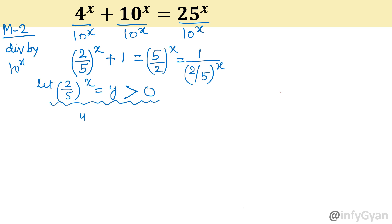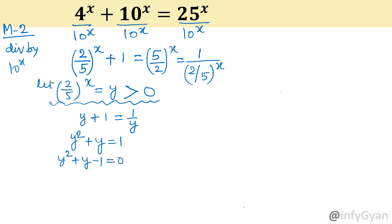So the equation will be y plus 1 equal to 1 over y. Multiply both sides by y, so y square plus y equal to 1, giving y square plus y minus 1 equal to 0. This is our quadratic equation: A is 1, B is 1, C is minus 1.